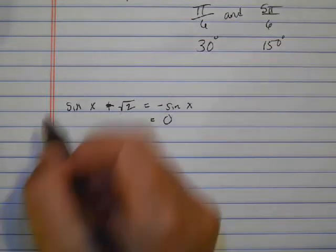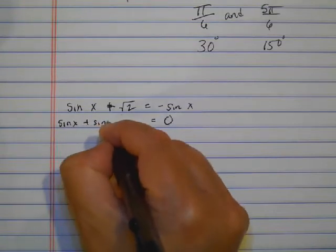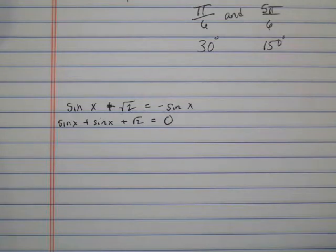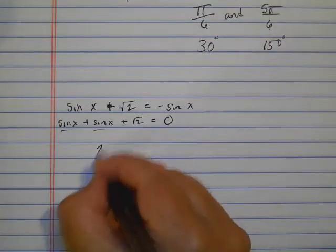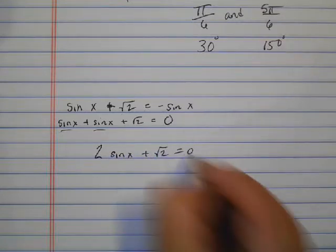So we're going to move that sine over here. So I'm going to have sine x plus sine x plus the square root of 2 equals 0. So I'm going to put these two like terms together and get 2 sine x plus the square root of 2 equals 0.